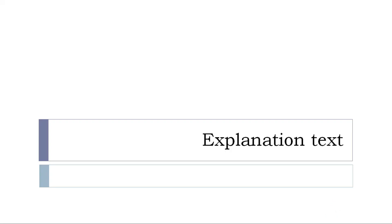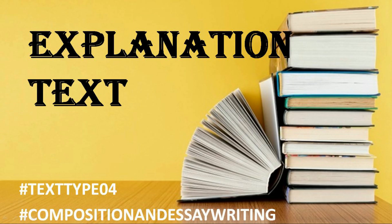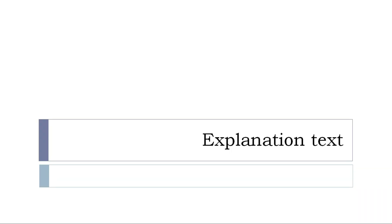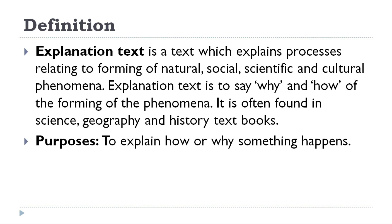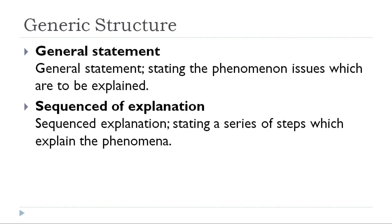Hello, good morning ladies and gentlemen. Today we continue our learning about text types. We have explanation text. Explanation text is a text which explains processes relating to forming of natural, social, scientific, and cultural phenomena. It explains the why and how of the forming of phenomena. It is often found in science, geography, and history textbooks.